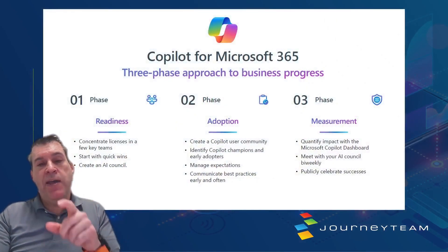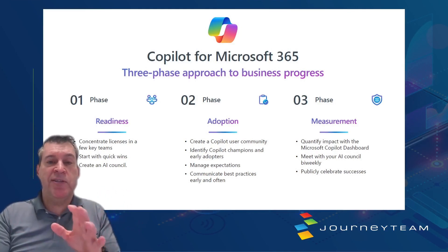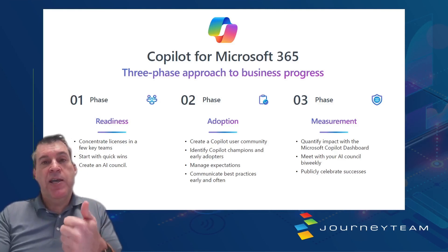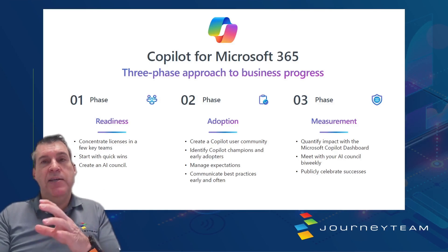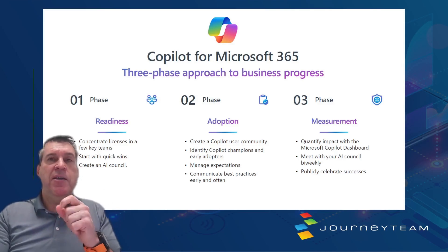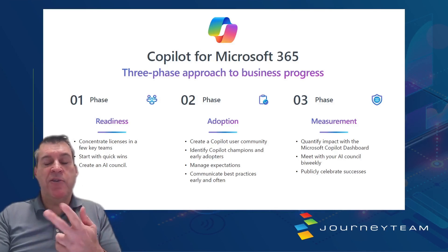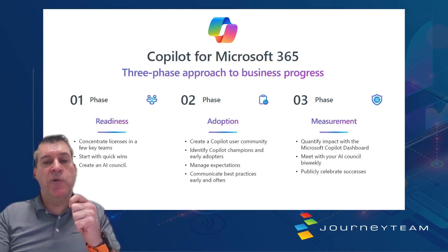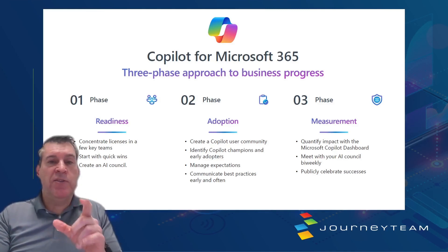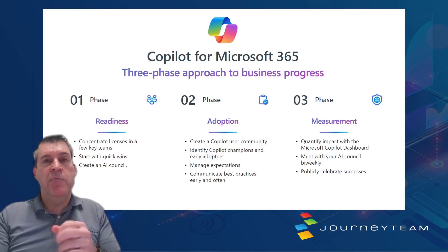Microsoft has a three-phase program, but first let's talk about table stakes — what you have to do before you even start. First, information architecture is key. Your information needs to be logically arrayed so that Copilot knows what is authoritative and what is not. Let's do the work to get your information in the right place before we use Copilot. Second, security and sharing hygiene are closely associated. Copilot doesn't change anything — it won't give you access to something you didn't have before — but it may expose gaps where security or sharing hygiene wasn't set up correctly. So let's review both before you turn on Copilot.